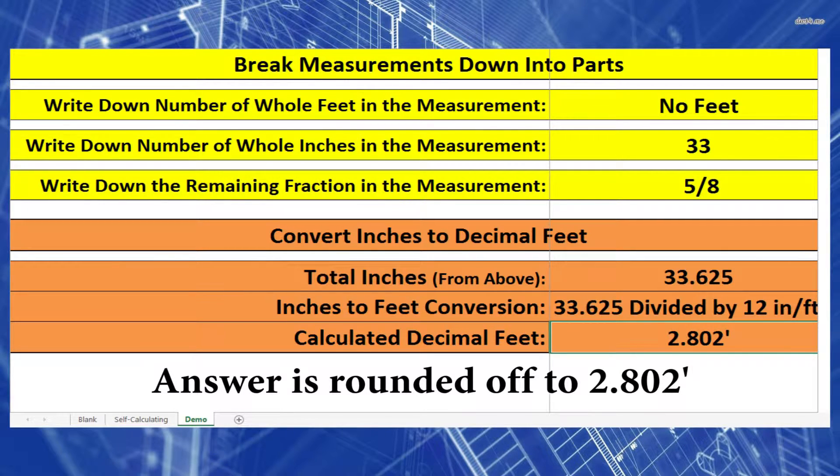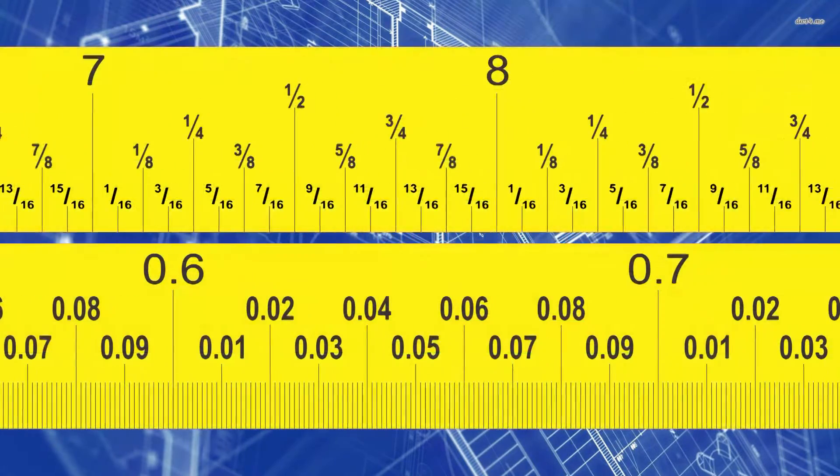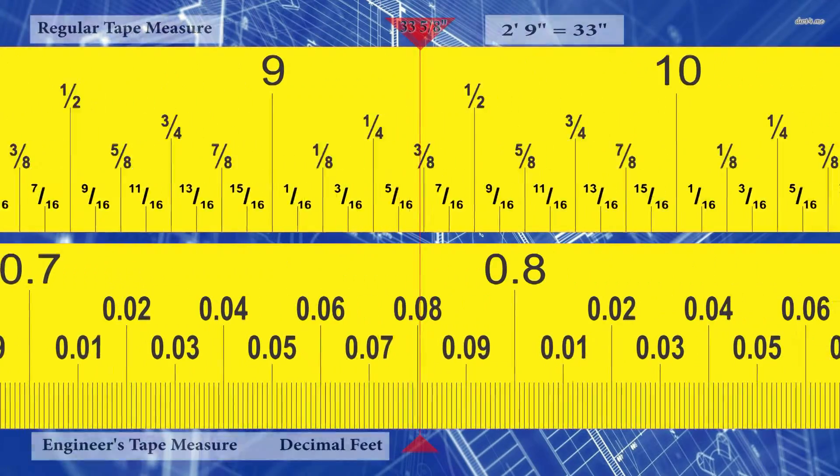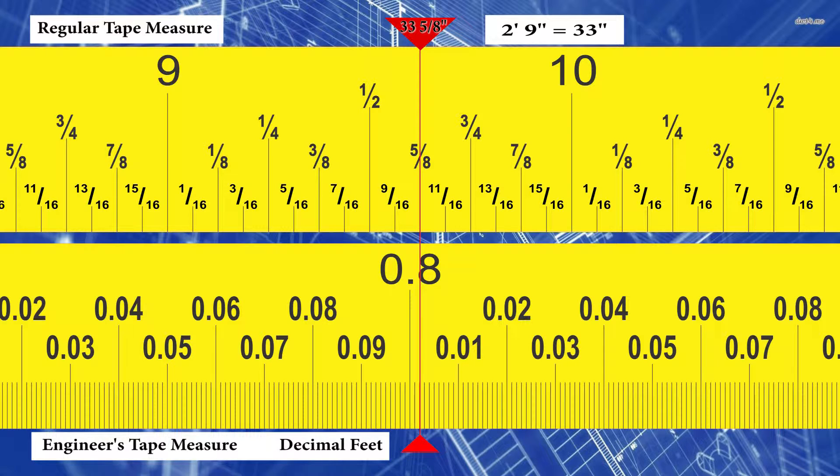Let's use our tape measures to check our answer. Let's draw a line down at 33 and 5 eighths inches on our regular tape measure. We're going to go down through our decimal foot engineer's tape measure. Now this one we should be able to see without pausing the video. It should pass through 2.802 feet. It'll look really close to 2.8 feet.